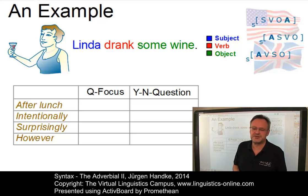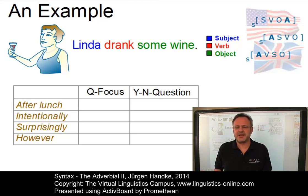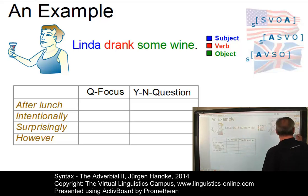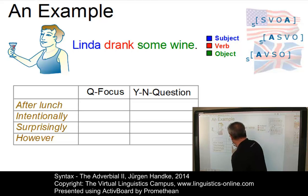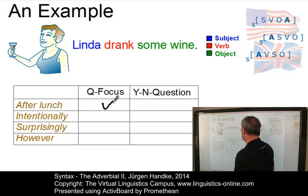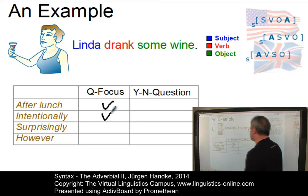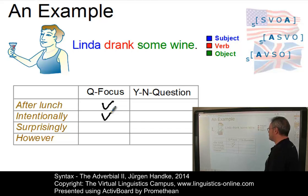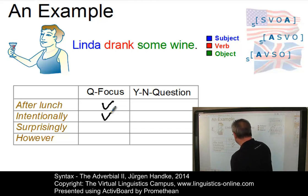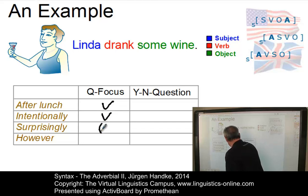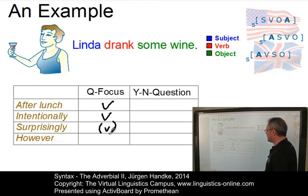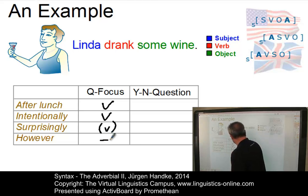Let us look at the question focus first. Can we say something like, did Linda drink some wine after lunch? Of course, this is possible. Did Linda drink some wine intentionally? Yes, that's a good sentence. Did Linda drink some wine surprisingly? It's grammatically correct, but it's to some extent a little bit strange. Did Linda drink some wine however? This is of course ungrammatical.